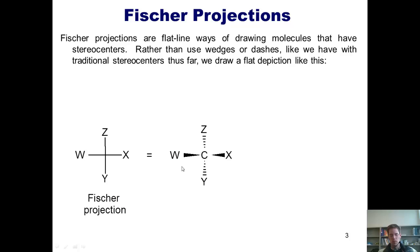The reason that we use Fischer projections is because, frankly, it's a whole lot faster and easier sometimes to draw just straight lines like this than to draw the wedges and dashes. That's particularly true when we start getting into molecules that have many, many stereocenters like carbohydrates.